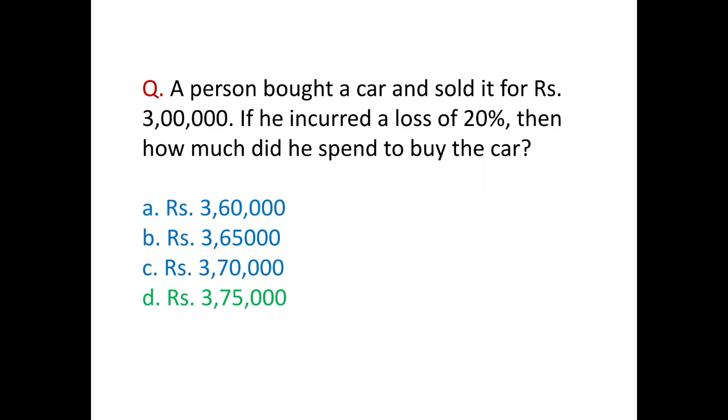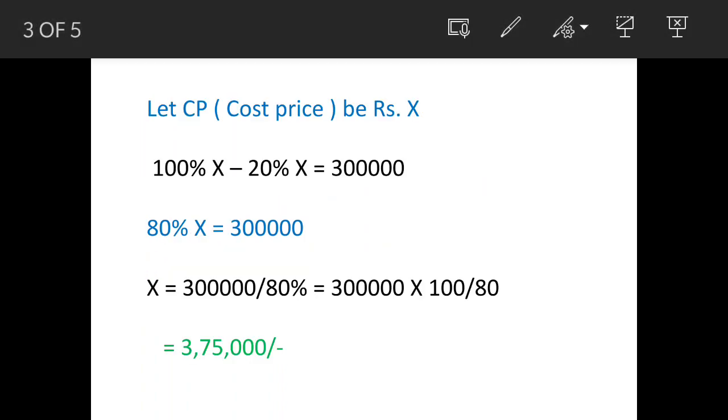So we'll see how to work it out correctly. Now let's assume that the cost price of the car is X. So it is stated that he is incurring a loss of twenty percent, so we'll write 100% X minus 20% X is equal to three lakh rupees. So that means 80% X is three lakh rupees. So X will be three lakh divided by 80%, and you simplify this, you get three lakh seventy-five thousand as the answer.